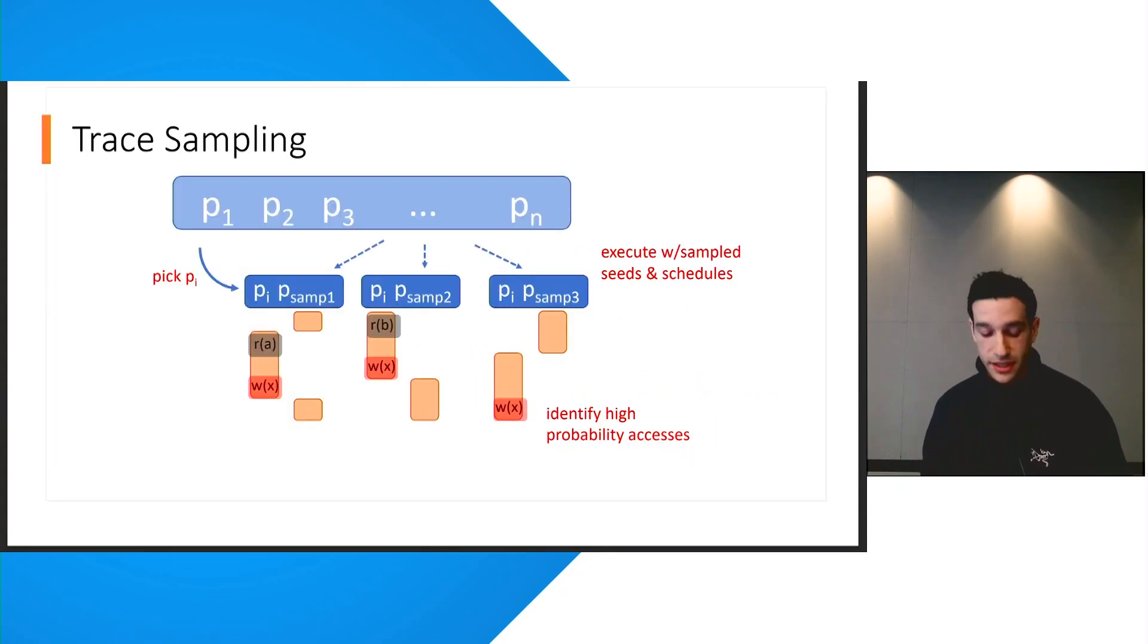So, in order to estimate the stable set of memory accesses, we sample memory accesses by executing each seed in the corpus with some other random seeds and schedules and recording their traces. We then identify memory accesses that happen with high probability in the traces and ignore memory accesses that aren't performed consistently or that are performed to different memory addresses on each execution.